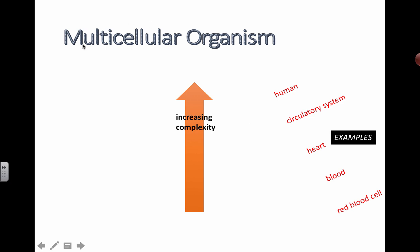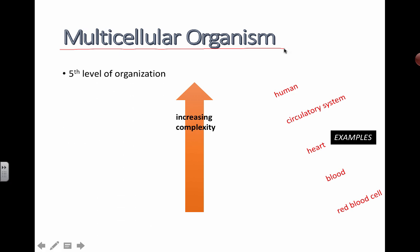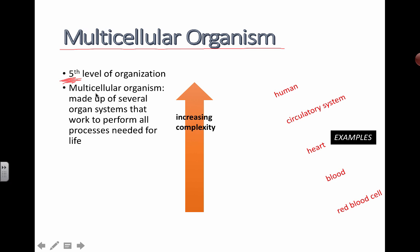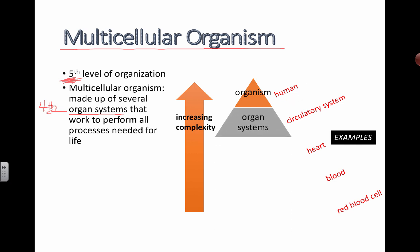Now we move to the final level: the organism. To be a multicellular organism, you have to have all the different levels underneath. At the fifth level, you're talking about the full living thing. A multicellular organism is made up of several organ systems that work to perform all the processes needed for life. For example, a human is at the fifth level; organ systems like the circulatory and digestive systems are the fourth level.